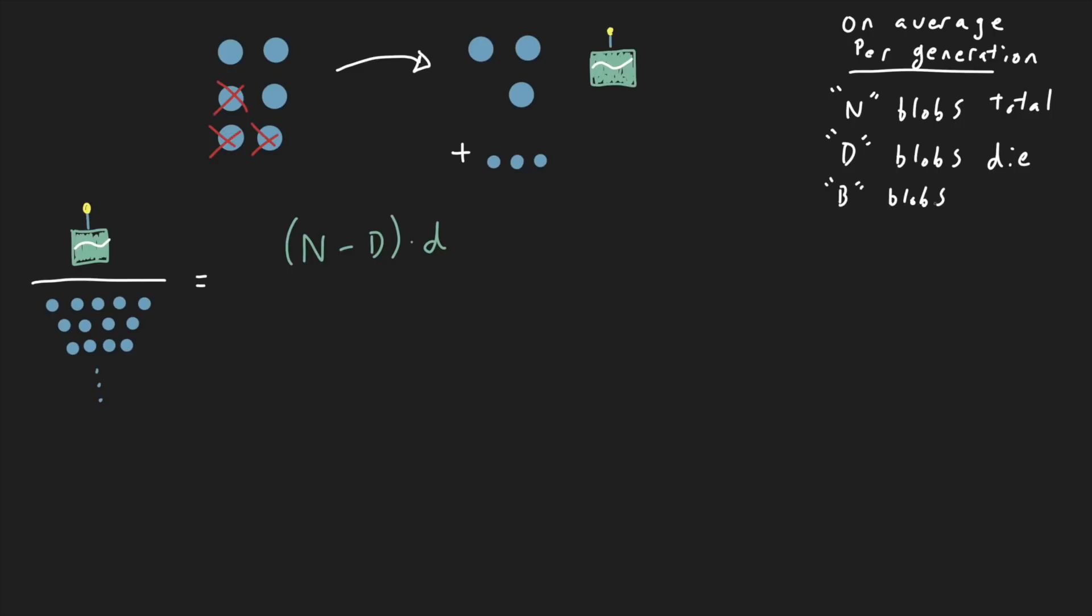Every day, we get new blobs being born. So, the number of blobs that have ever existed is going to be the number of blobs born each day, times the number of days, plus the number we start with. Since we're assuming that, on average, the number of blobs remains the same, that means that the number of blobs born is the same as the number that die. Now, we can just divide to get the average age.